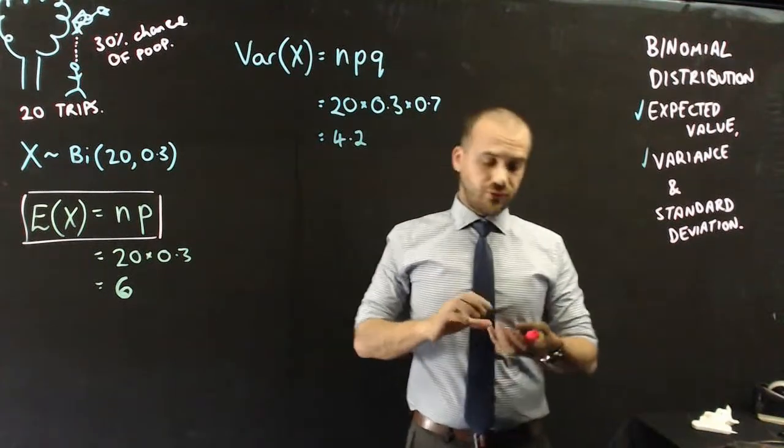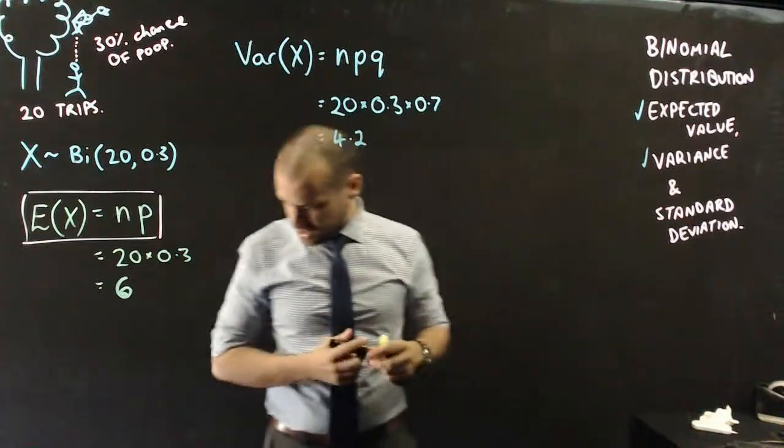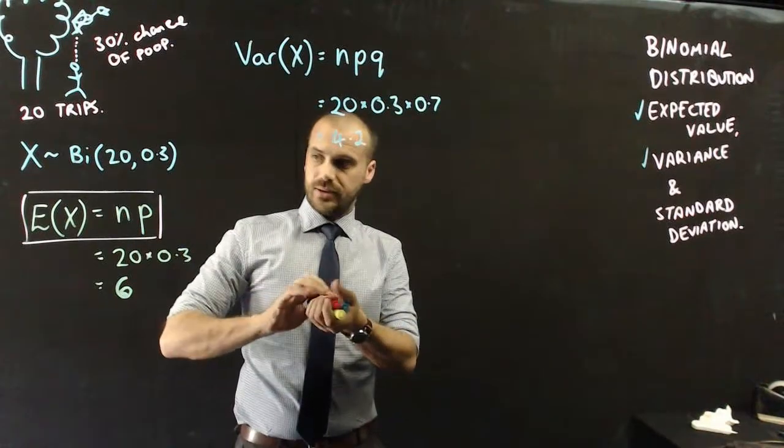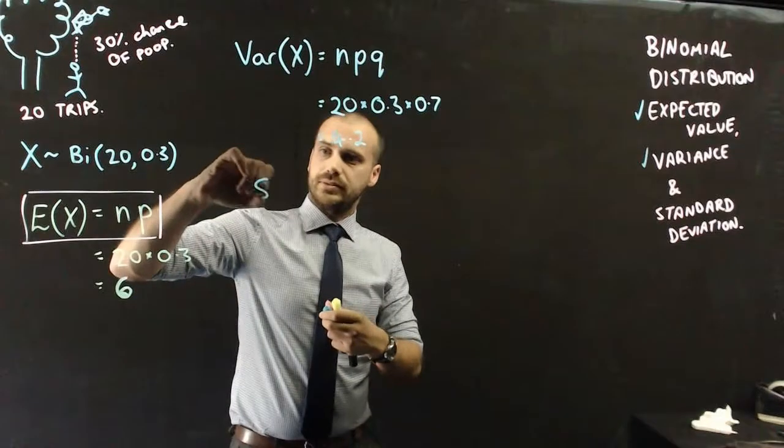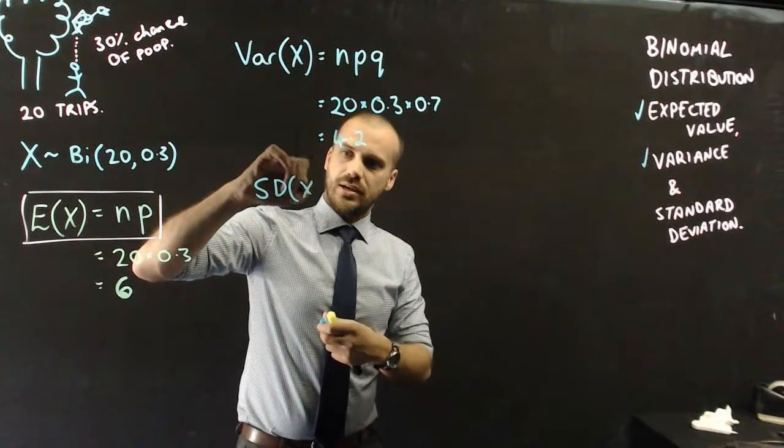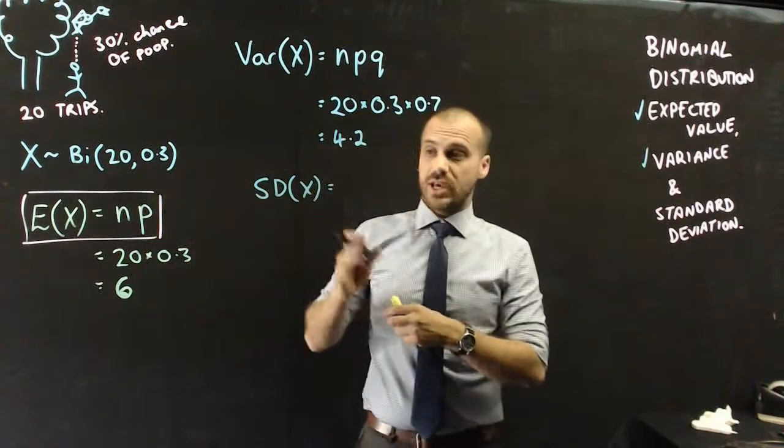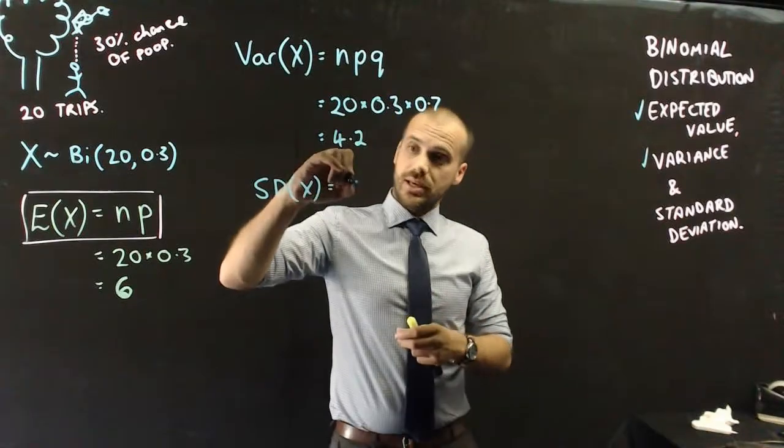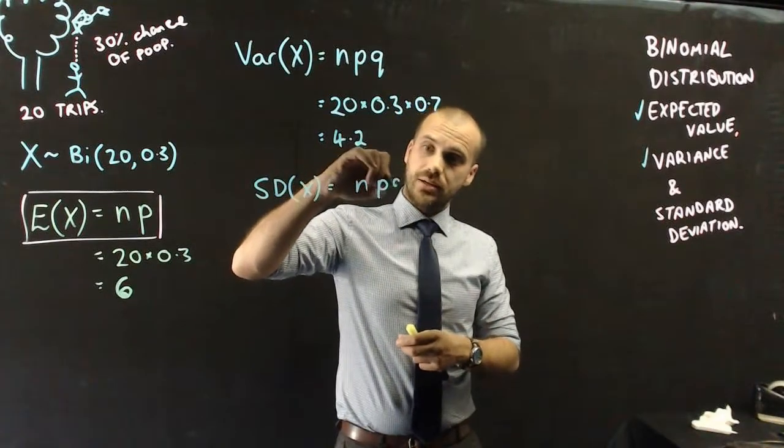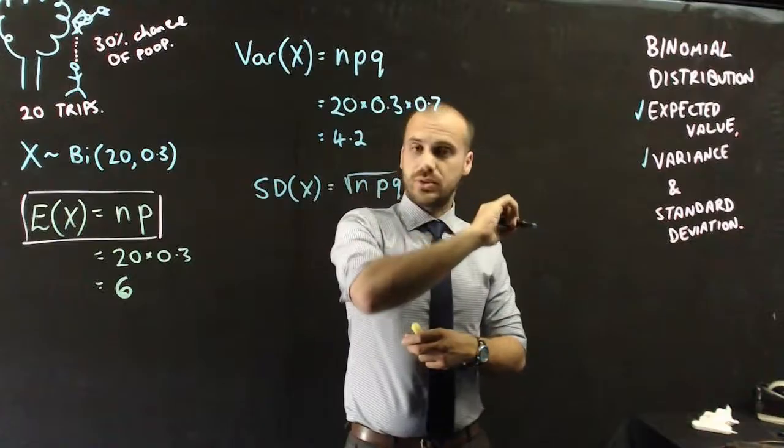So, what's the formula for standard deviation? Well, we're going to use the letter SD, standard deviation. And the formula for the standard deviation of the variable X is NPQ square root.